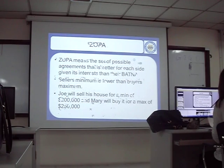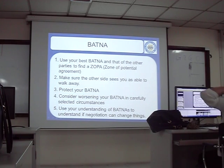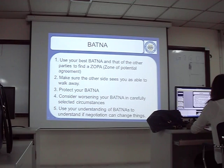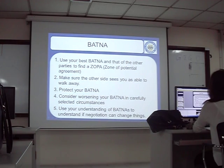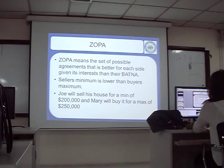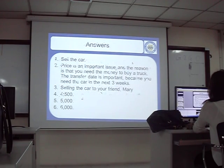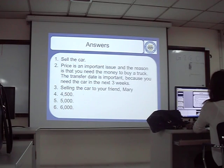We discussed five things; in the last class we covered number one: using your BATNA and the other partner's to find the ZOPA. Today we're going to discuss the other ones, and we're also going to discuss making decision trees. The last class we finished by talking about the ZOPA and gave an example of buying a car — a simple negotiation.